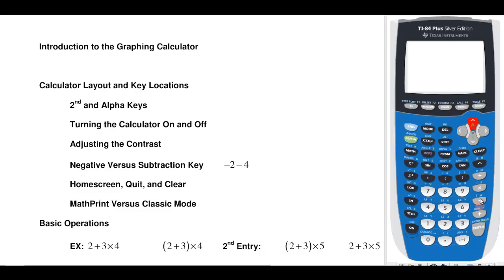I have my basic operation functions and various functions on the calculator down here on the keys. You'll also notice that there are a lot of letters that are above each of these keys in addition to the letters being on the keys, and those are color coded with either the second button or the alpha button. So if I wanted the square root function, I'd have to hit the second button and you'll notice that it blinks with an arrow. Then if I hit the x squared button I'm actually going to get the function that's above it, the square root.